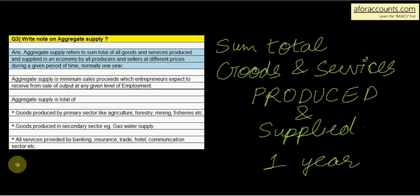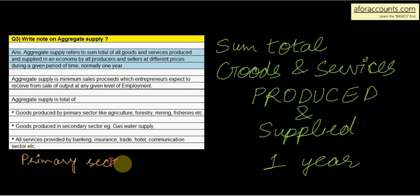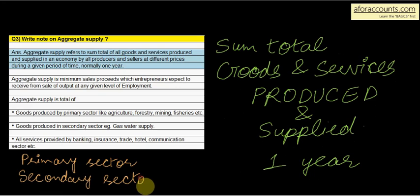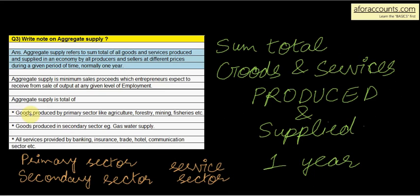Aggregate supply is the total of three things. One is goods produced in the primary sector — things related to the earth, generally. For example: agriculture, forest, mining, fisheries, etc.